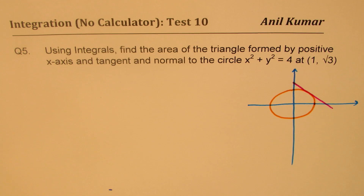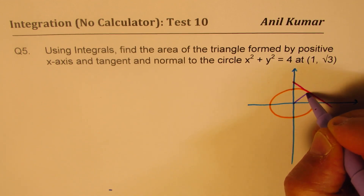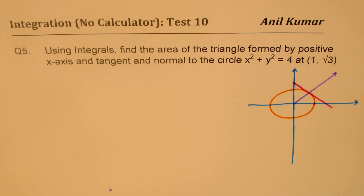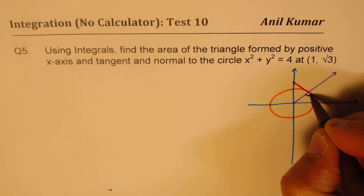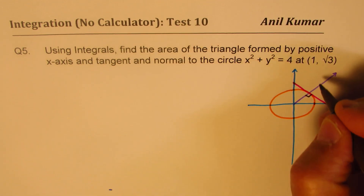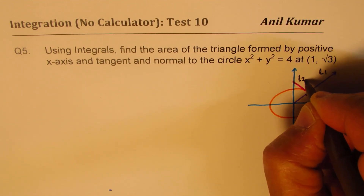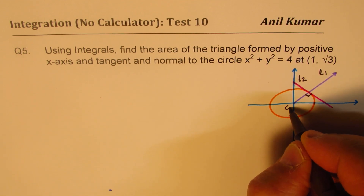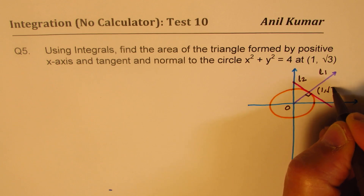The normal at this point will be the line joining from the origin itself. As you know, the radius is always at right angles to the tangent. So this angle here is a right angle. We have two lines — let's call this line L1 and the other line L2. The point given is (1, √3).